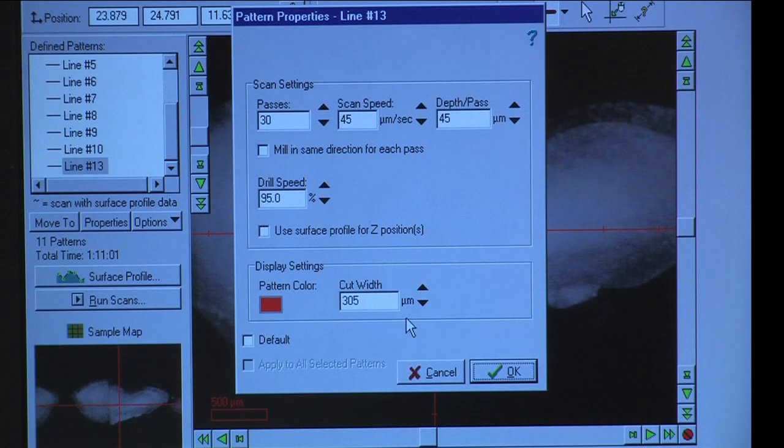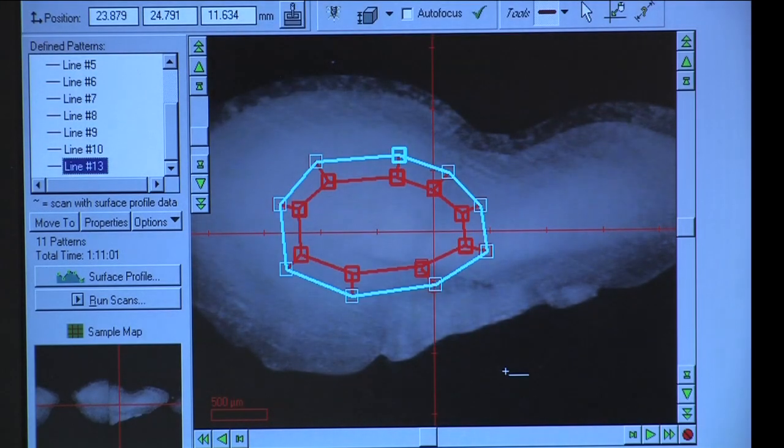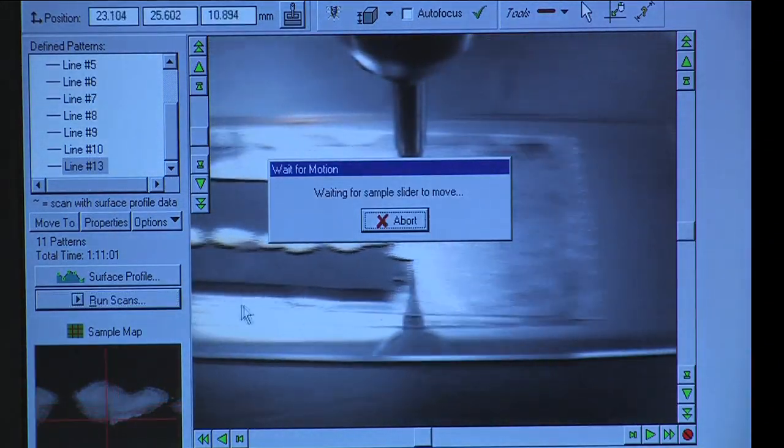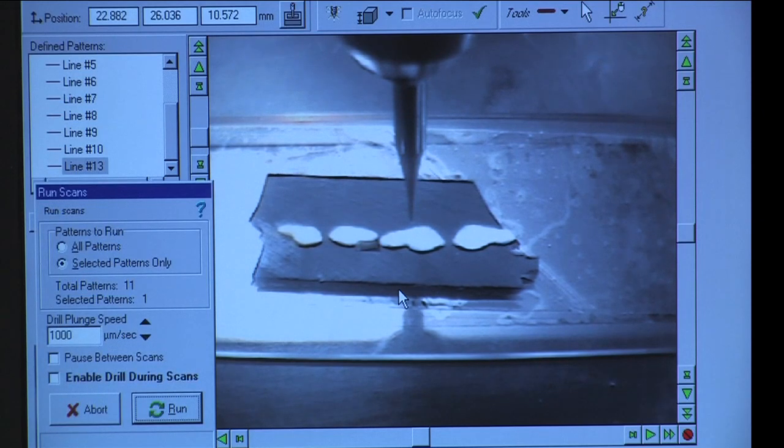When your settings are adjusted, click OK and then click on Run Scans on the left-hand side of the screen and a window will pop up. Click on Selected Patterns Only and be sure to check the Enable Drill during Scan box. Click Run and the drill will begin drilling.